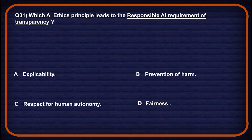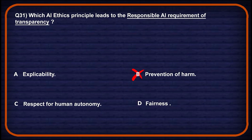Option B: prevention of harm focuses on avoiding negative outcomes, not directly tied to transparency — not the correct choice. Option C: respect for human autonomy ensures human control over AI but doesn't directly lead to transparency — not correct. Option D: fairness aims to prevent bias and discrimination but expressibility drives transparency, so again the wrong choice. Option A is the correct one.